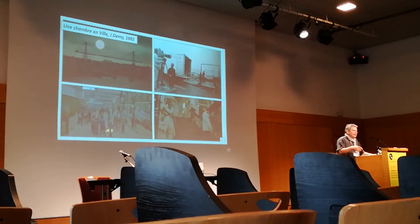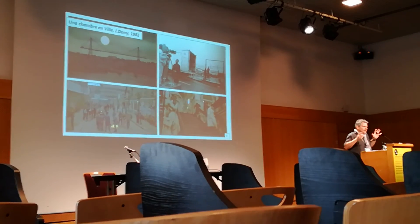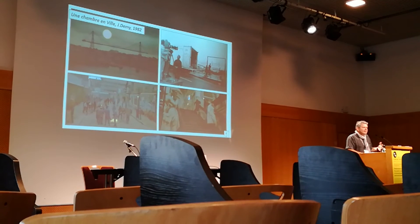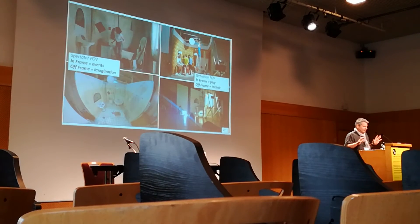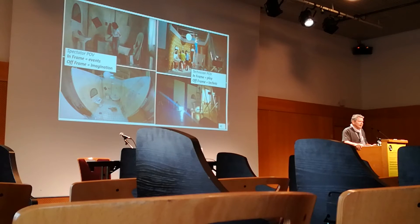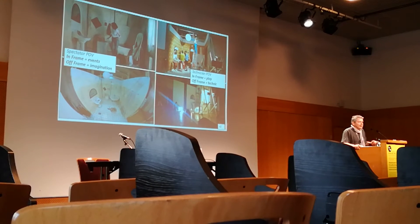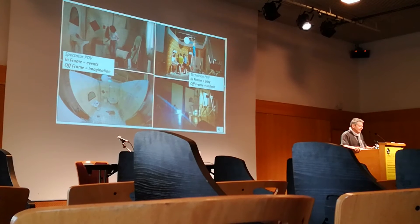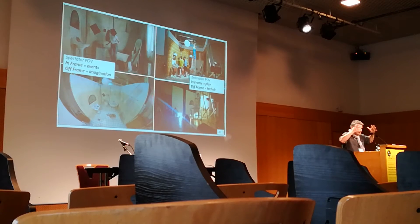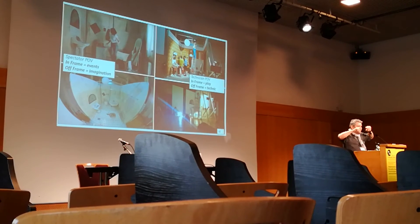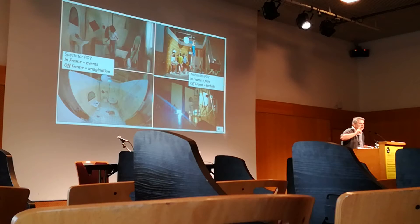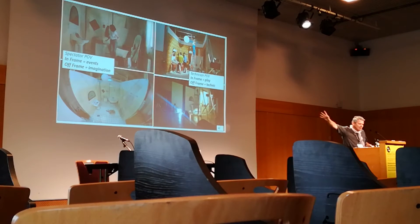In cinema, the frame is something in which you can build effects. You can summarize it within two points of view: the spectator's point of view — in the frame you have the events, the story which is going on — and off-frame is the imagination. The spectator imagines what is off-frame. If a character exits the frame, we believe that he is still alive and still in the story, but somewhere else, off-frame.